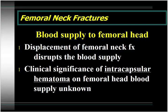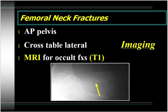The blood supply of the femoral head is a very important factor in femoral neck fractures because displacement will inevitably disrupt the blood supply, often leading to the development of an intracapsular hematoma. This hematoma has been the subject of much debate — many authors believe it must be decompressed to reestablish blood supply, though that is controversial. The radiographic evaluation should consist of an AP pelvis x-ray with contralateral control. A cross-table lateral can also be very important for picking up subtle incomplete fractures. If you suspect an occult fracture, the diagnostic procedure of choice is an MRI with T1-weighted image.